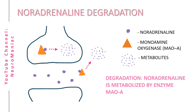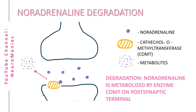This degradation process can take place both intracellularly and extracellularly. Another enzyme that metabolizes noradrenaline is catechol-O-methyltransferase, or COMT. This is a membrane-bound protein found on the postsynaptic terminal. Within the central nervous system, we should note the degradation process contains more steps.